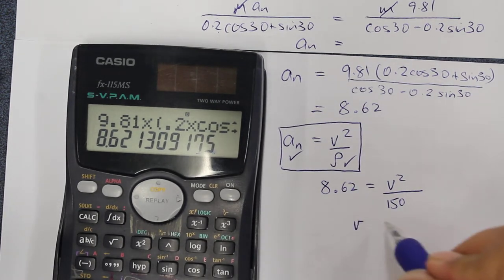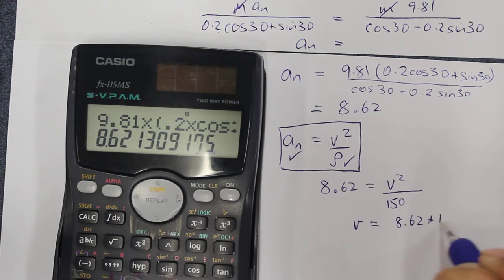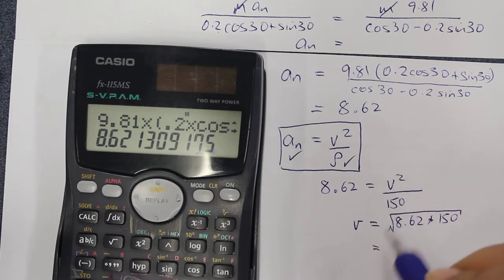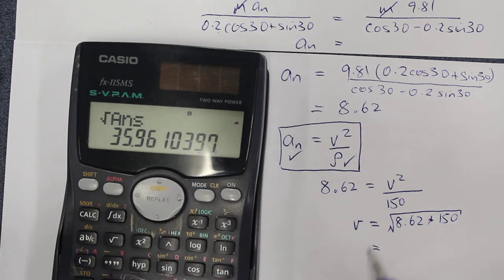We can rearrange so v is equal to the square root of 8.62 times 150 to find the velocity which we are looking for. 8.62 multiplied by 150, and then the square root of that number, we get 35.96.